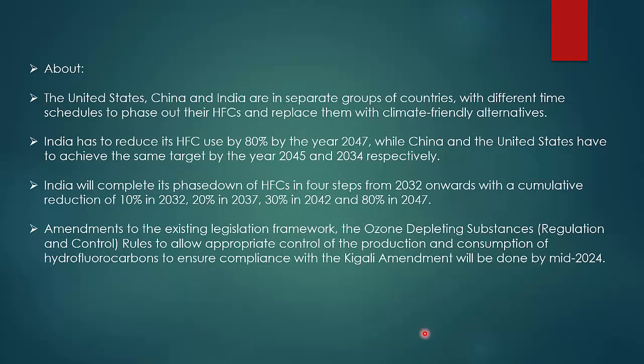India ki liye kya goal hai? USA, China and India are in separate groups with different time schedules to phase out their HFCs. India has to reduce its HFCs use by 80% by the year 2047, while China and the United States have to achieve the same target by 2045 and 2034 respectively. India will complete its phase-down in four steps from 2032 onwards: 10% reduction in 2032, 20% in 2037, 30% in 2042, and 80% in 2047.